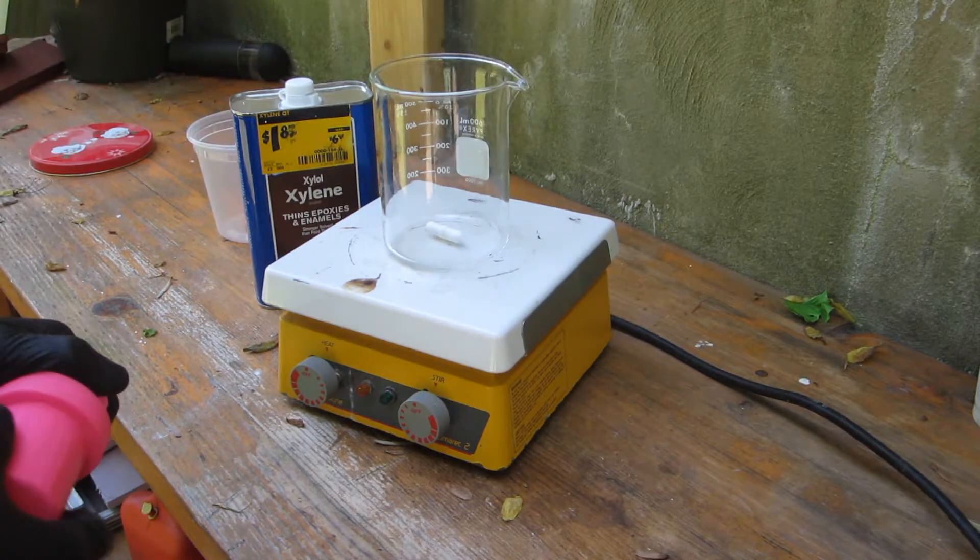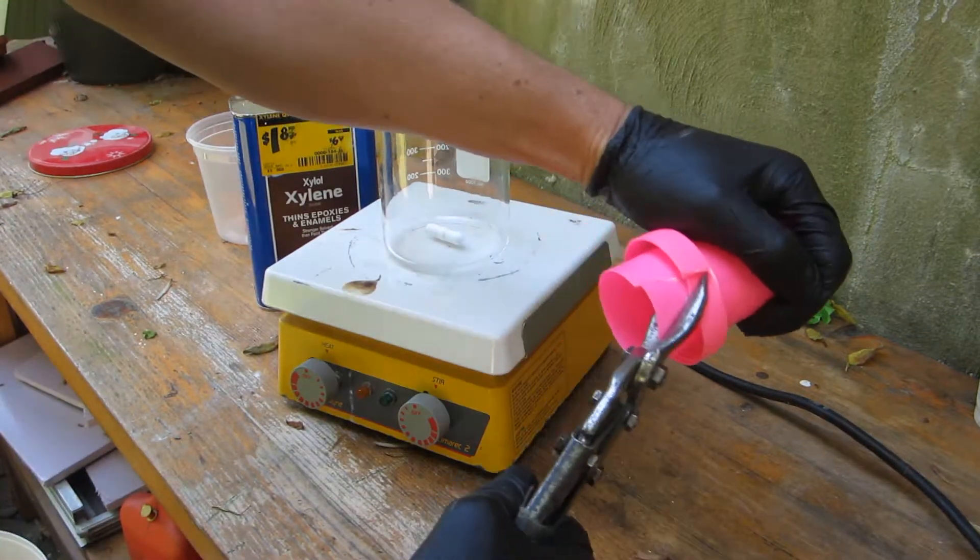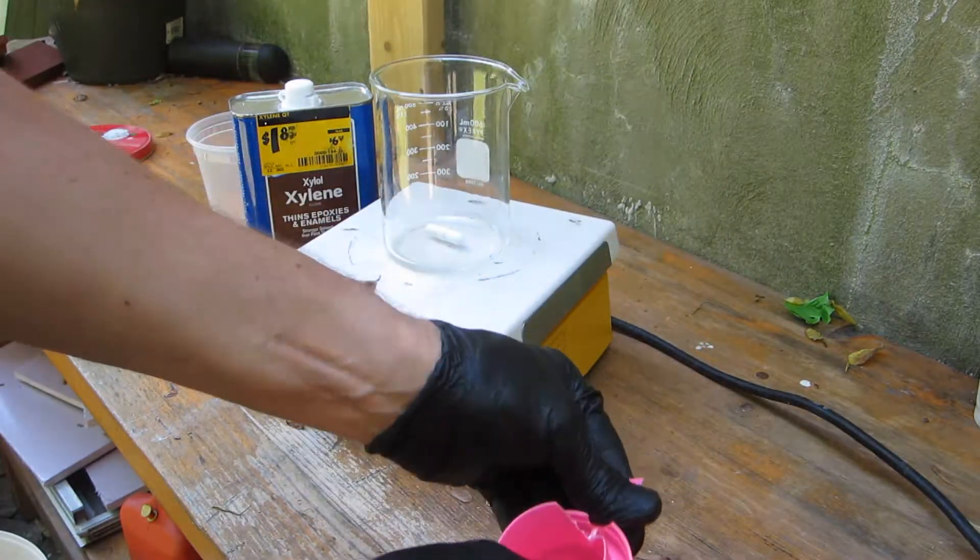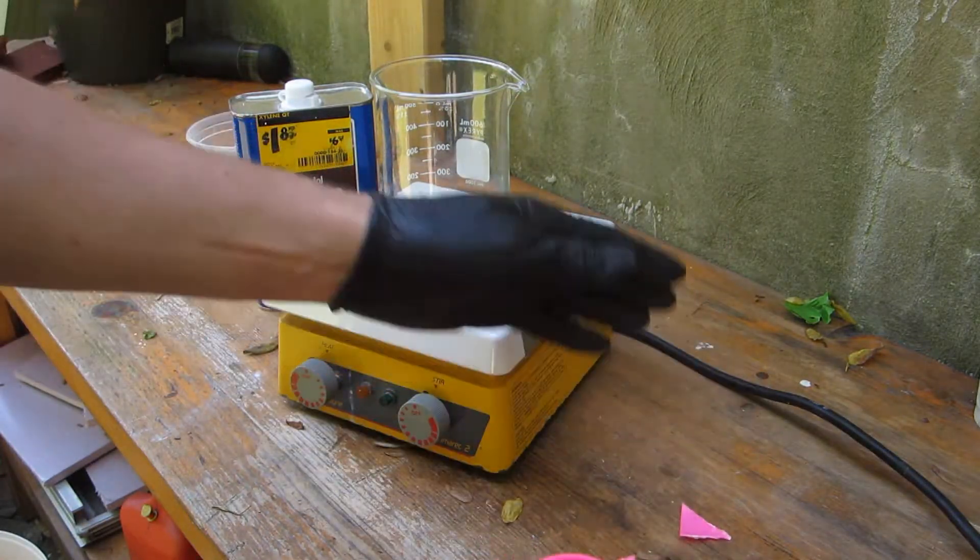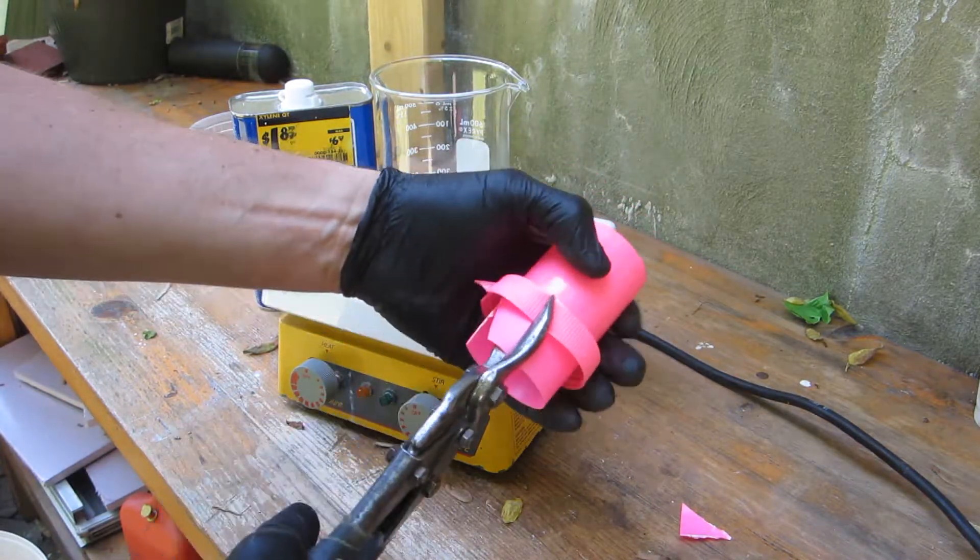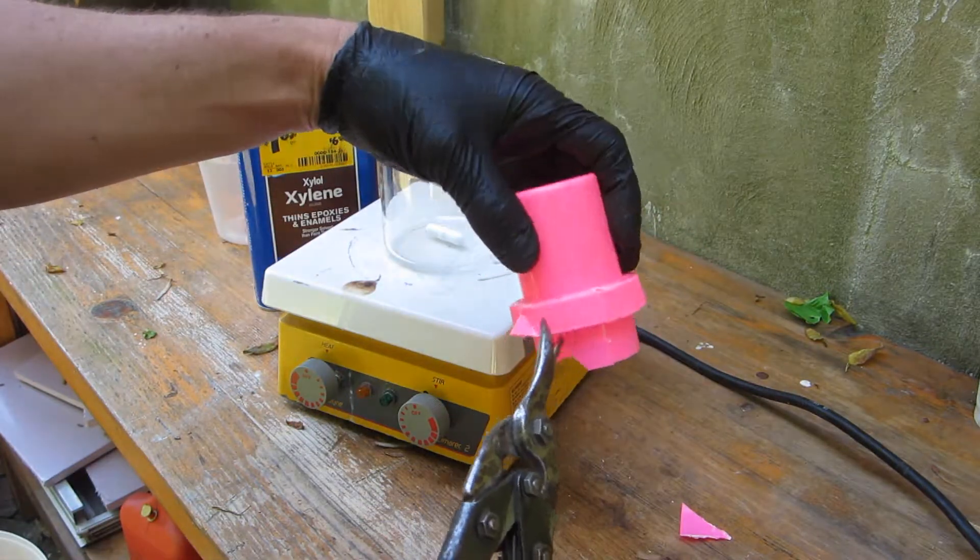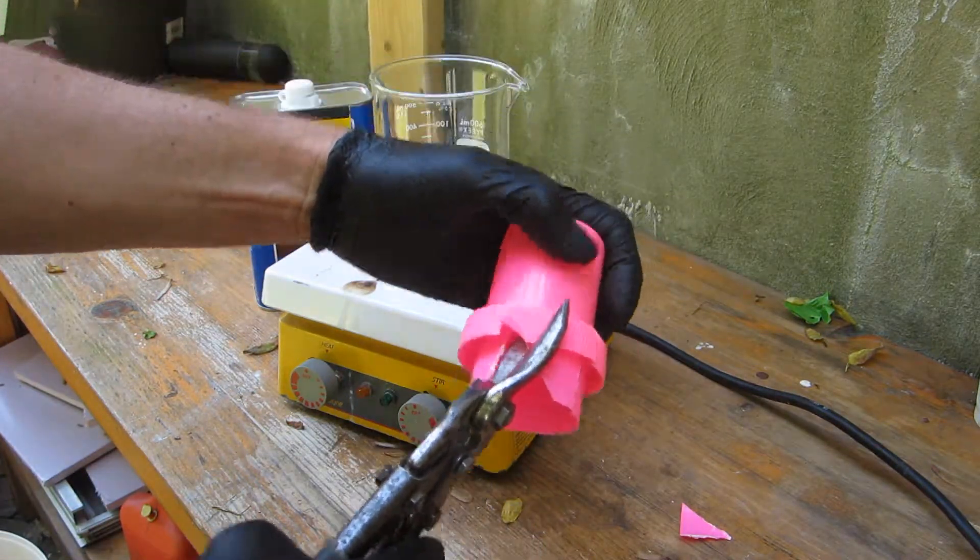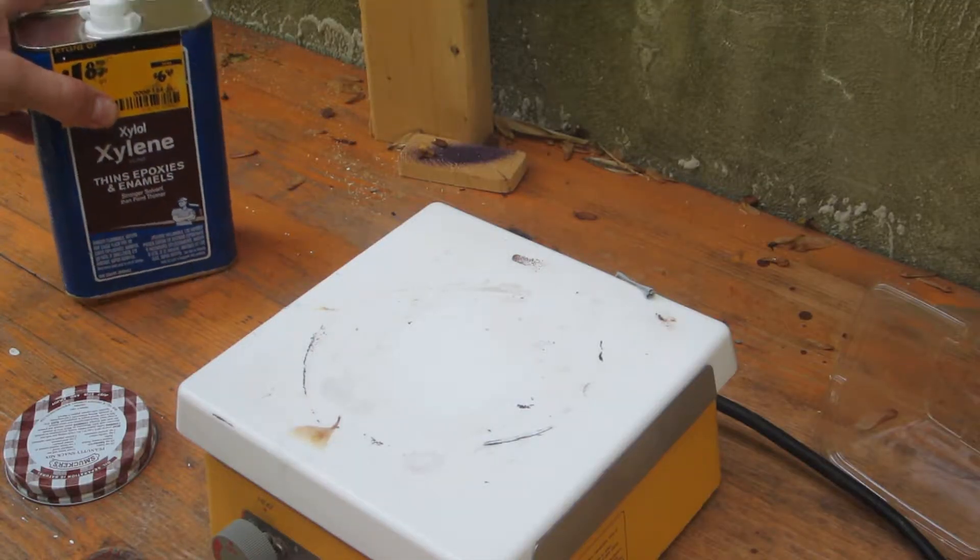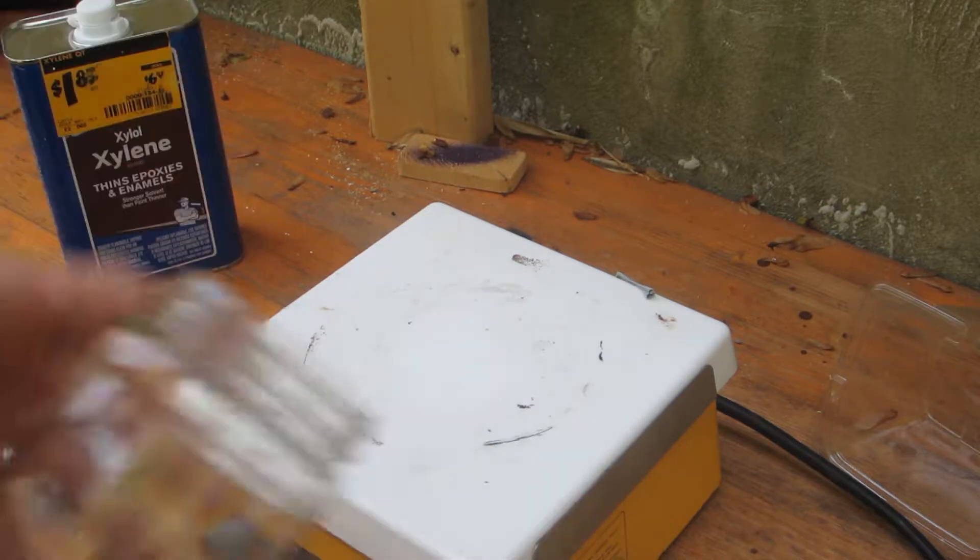We're gonna try and heat up some number five plastic, cut some pieces of this and dissolve it in the xylene. To be honest I did have a go at dissolving PET, that number one plastic, in xylene without any success at all. That stuff is crazy. We're gonna give another shot at dissolving some plastic and seeing if we can make anything out of it.